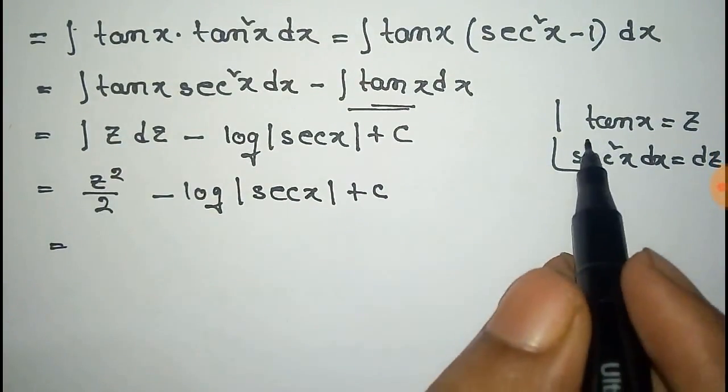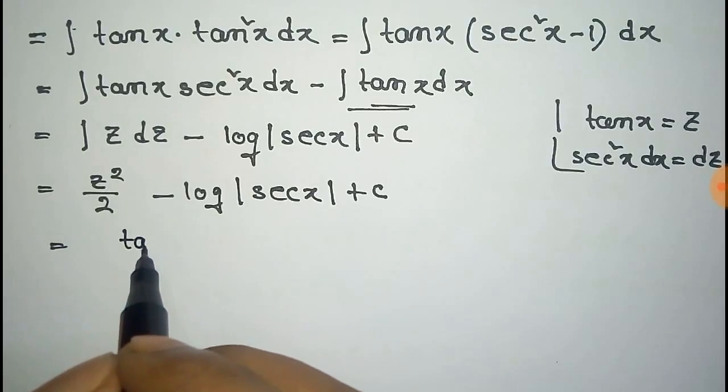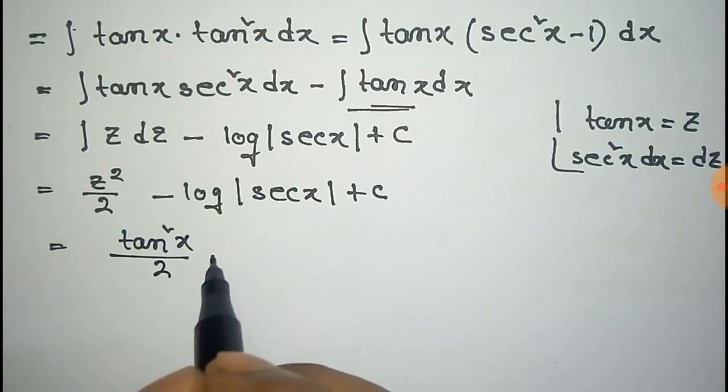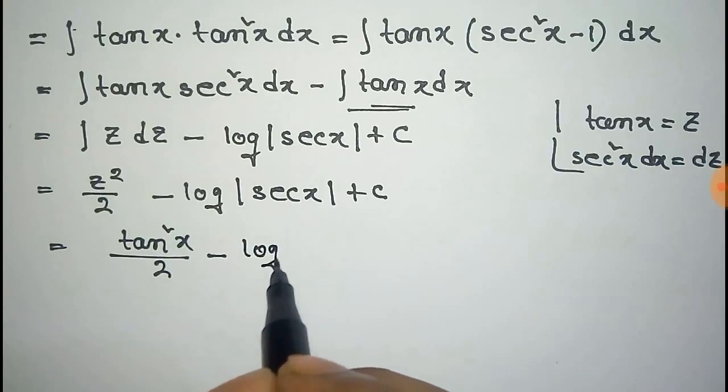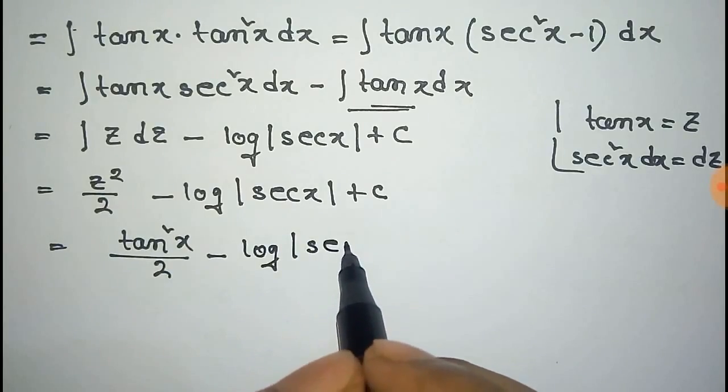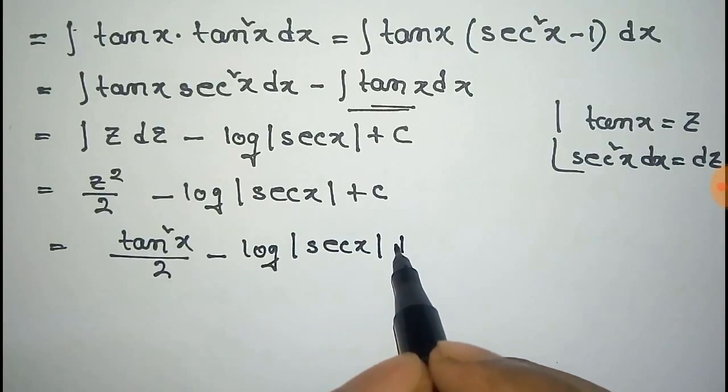So we have to put the value of z, that's tanx, so that will be tan²x by 2 minus log of mod of secx plus constant c dash.